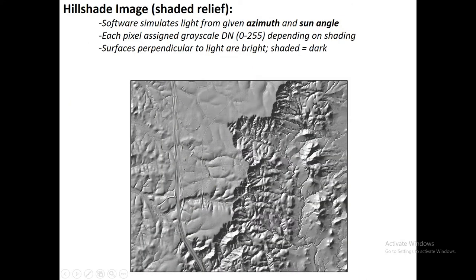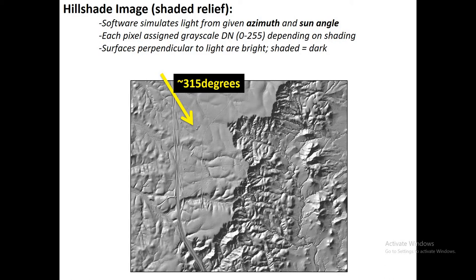So how does it work? Essentially, the software simulates light from a given azimuth or compass direction and a given sun angle. This image is being illuminated from 315 degrees — from the northwest. It is typical to illuminate your image from the top. The reason is that even though the sun comes from the south in the northern hemisphere, when we're at our computer we're used to seeing light coming from above, from the ceiling, so our mind tends to interpret shadows in that framework.